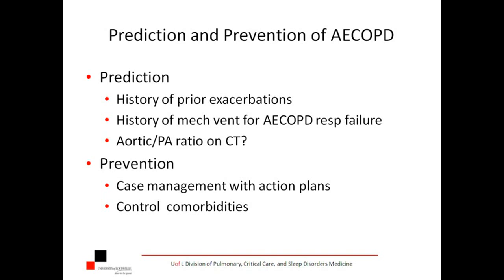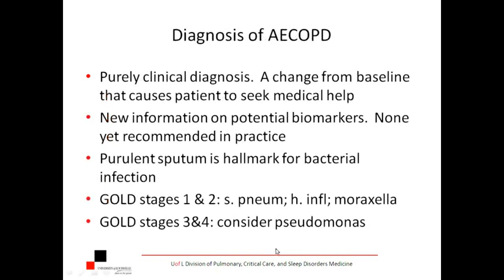Of course, controlling the comorbidities — these folks have terrible cardiovascular disease, may be diabetic, peripheral vascular disease. Those issues need to be controlled as well. The diagnosis of acute exacerbation is purely clinical — a change from baseline that causes the patient to seek medical help. Coming out of the COPD Gene Study, there may be some interesting biomarkers — looking at CRP as a measure of chronic indolent inflammation, fibrinogen, tumor necrosis factor. A high eosinophil count is also being looked at — a high eosinophil count means these people are more prone to acute exacerbations.